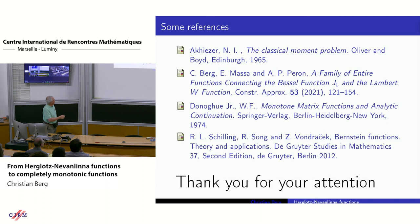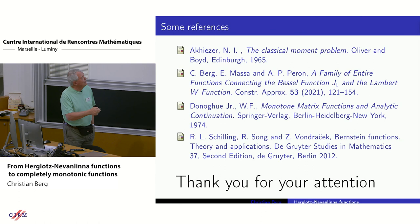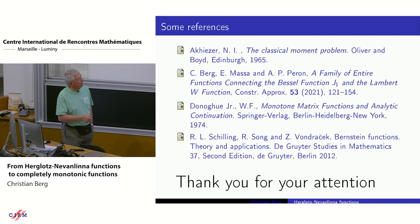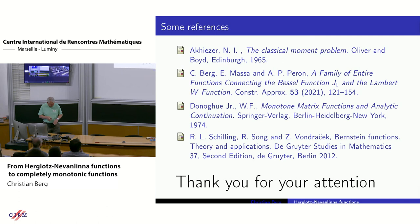I am sure all of you know this wonderful book about our class of functions — where I first learned about it — by Donoghue, titled 'Monotone Matrix Functions and Analytic Continuation'. This is my work with Massa and Peron, and this is a book by Schilling on Complete Bernstein functions, which is also a book about the Herglotz-Nevanlinna functions in a special case. Thank you for your attention.